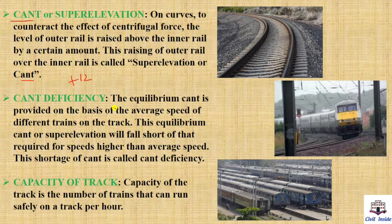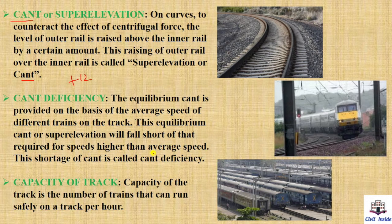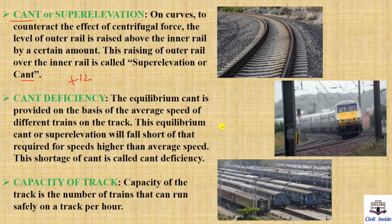Next, cant deficiency. The equilibrium cant is provided on the basis of the average speed of different trains on the track. This equilibrium cant and super elevation will fall short of that required for speeds higher than the average speed. This shortage of cant is called cant deficiency. When a train moves faster than the average design speed, the cant becomes deficient — we call this cant deficiency.